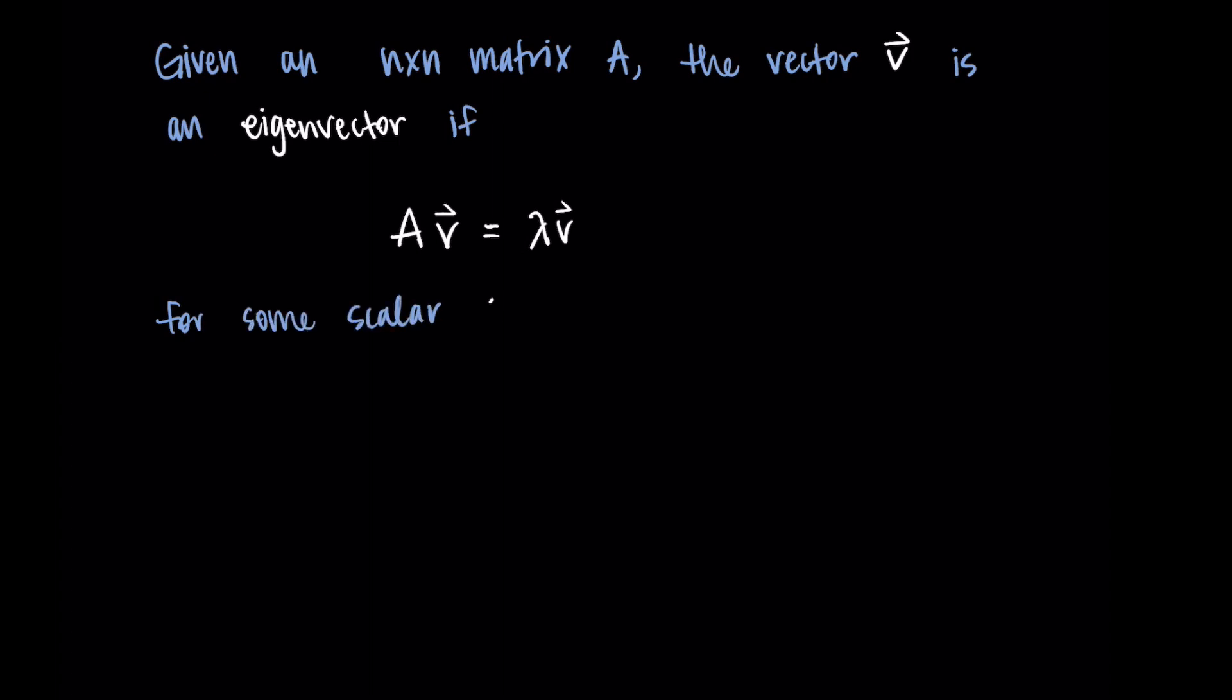Let's go on to the formal definition. Given an n by n matrix A, the vector v is an eigenvector if it has this property that A times v is equal to lambda times v for some scalar lambda that we call an eigenvalue. We have this eigenvector, the vector v. It's a special vector that when we apply A to it, we get lambda times v, and that specific value lambda we call the eigenvalue. We think of these in pairs—an eigenvector will have a corresponding eigenvalue. There could be more than one eigenvector, more than one eigenvalue, but we think about them corresponding to each other.